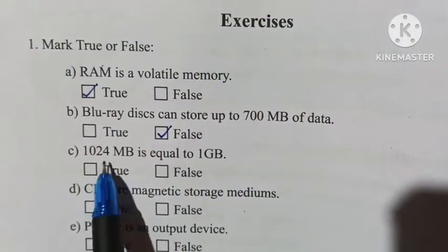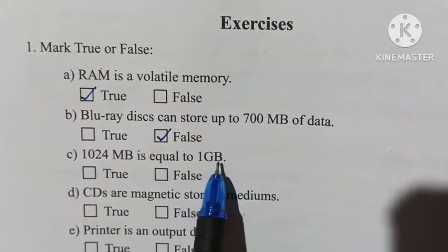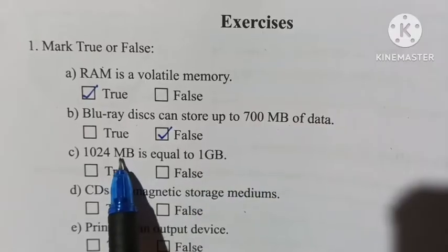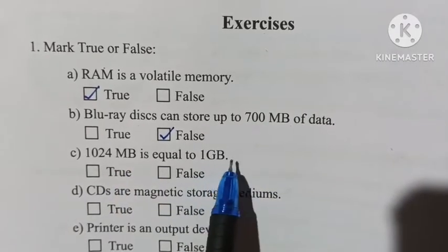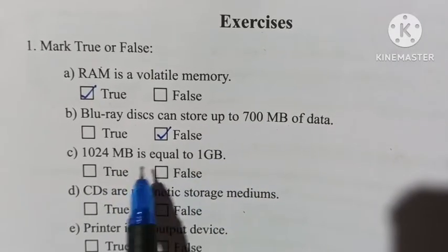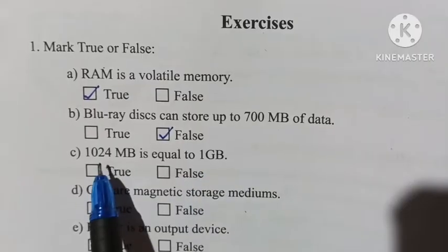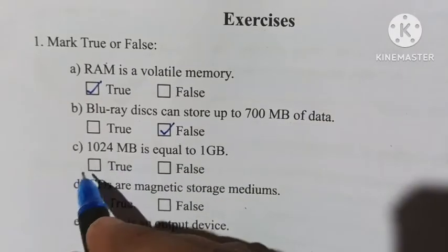1024 MB is equal to 1 GB. MB means megabyte and GB means gigabyte. So it is true — 1 GB equals 1024 MB.